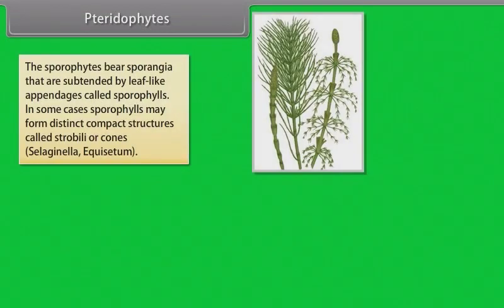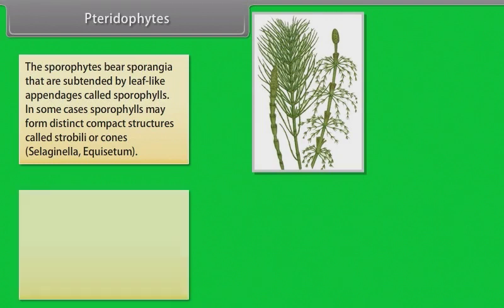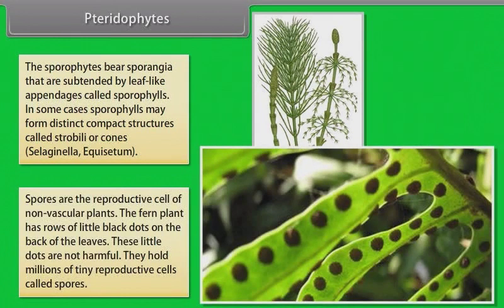The sporophytes bear sporangia that are subtended by leaf-like appendages called sporophylls. In some cases, sporophylls may form distinct compact structures called strobili or cones, Selaginella, Equisetum. Spores are reproductive cell of non-vascular plants. The fern plant has rows of little black dots on the back of the leaves. These little dots are not harmful. They hold millions of tiny reproductive cells called spores.